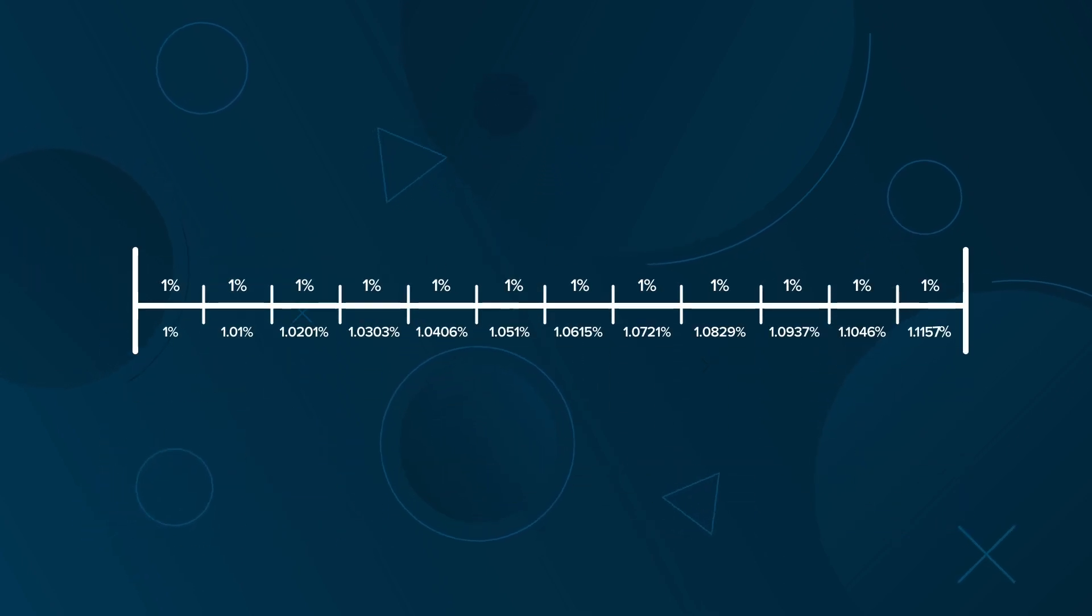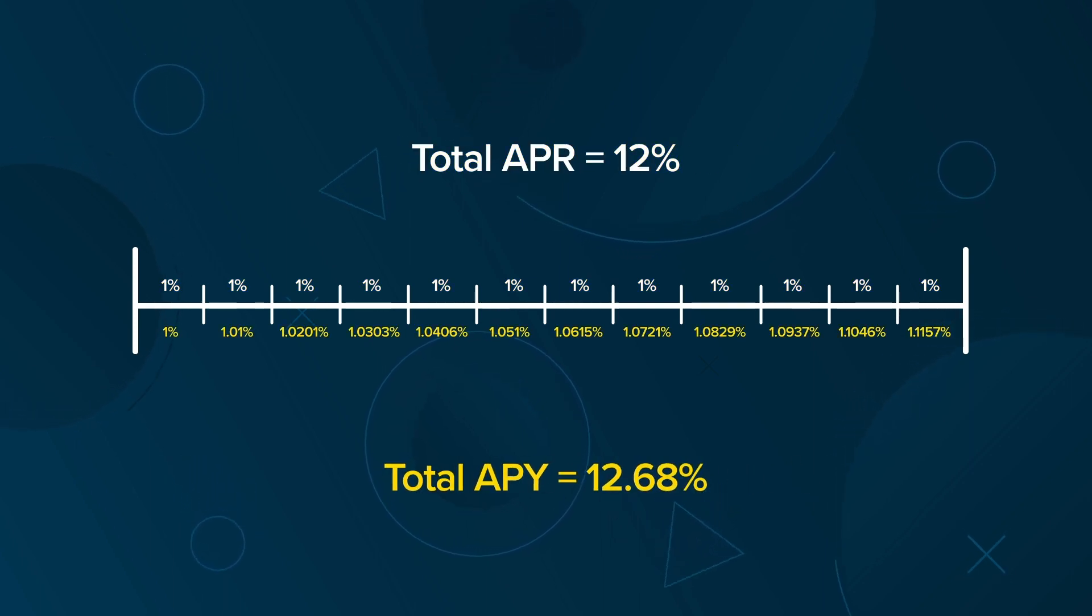For example, an investment compounded monthly with a 12% APR will have a 12.68% APY.